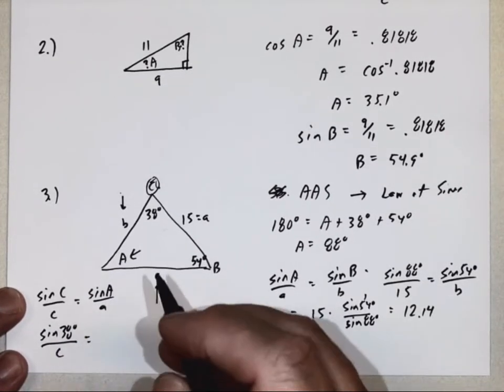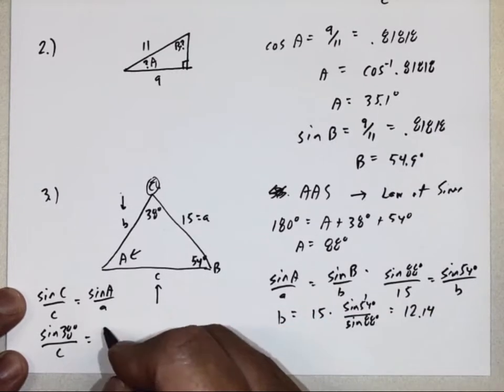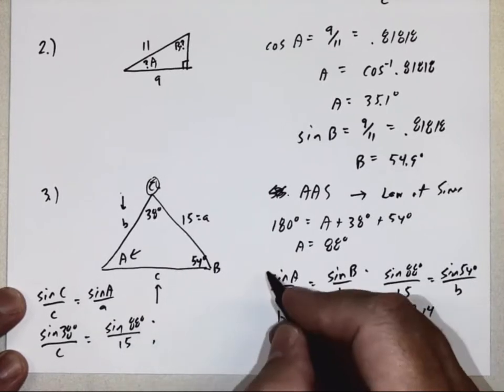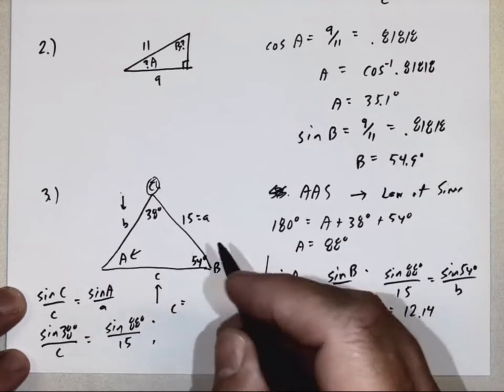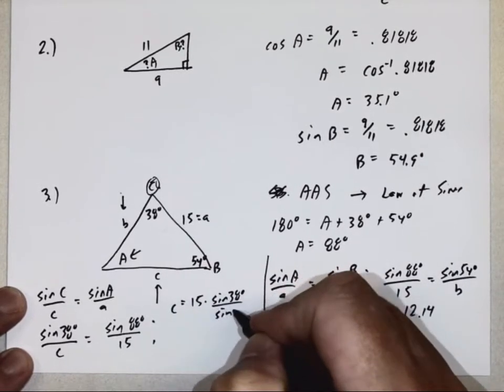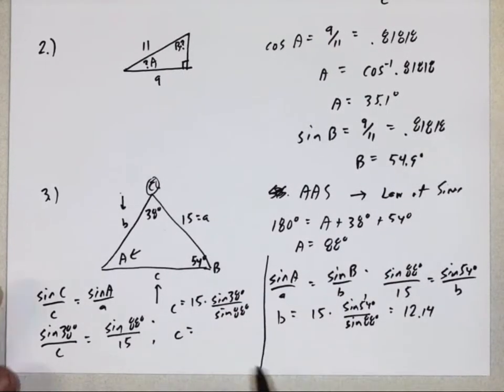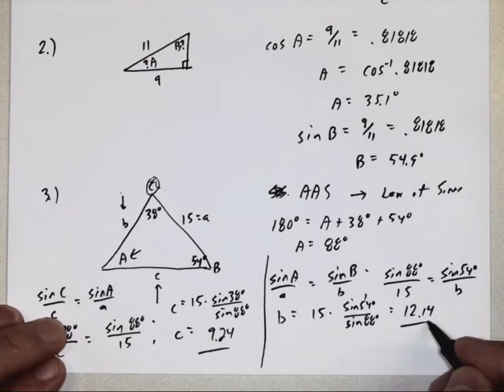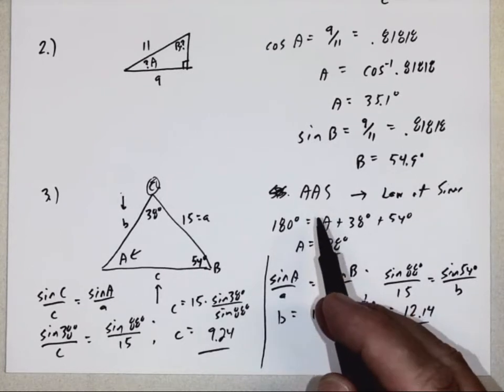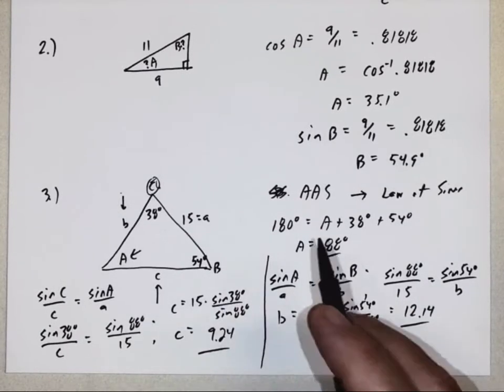We just figured out A was 88 degrees over side A, which is 15. If we solve for C, 15 times sine of 38 degrees, sine of 88 degrees. So this one, 38 degrees sine divided by 88 degrees sine equals times 15. It's like 9.24. So, we found all three of those. So this is the easy one. Angle, angle, sine. Right away you can find the third angle and then use the law of sines to find the rest of the sides.